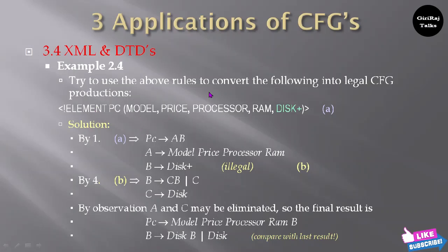Using the above rules to convert the following into legal context-free productions: element PC has model, price, processor, ram, and disk-plus. By the first equation, PC converts to A B, where A covers model, price, processor, ram, and B covers disk-plus. Applying the fourth equation, B tends to C B, and C tends to disk. By observation, A and C may be eliminated, giving the final result: PC tends to model, price, processor, ram, B; and B tends to disk B or disk.